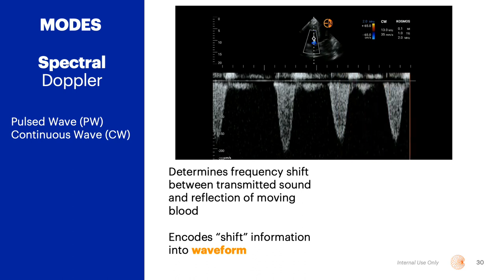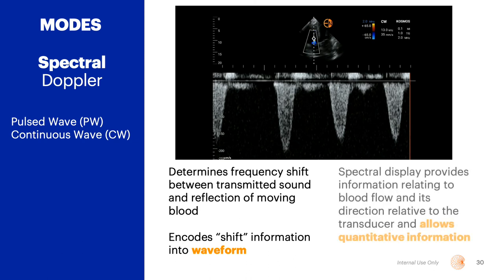Like color Doppler, spectral Doppler determines the frequency shift between the transmitted sound and the reflection of moving blood. It encodes the shift information into a waveform and displays the flow data in its direction relative to the transducer. It also allows for quantitative information to be obtained. Cosmos has both pulsed wave and continuous wave Doppler technologies.